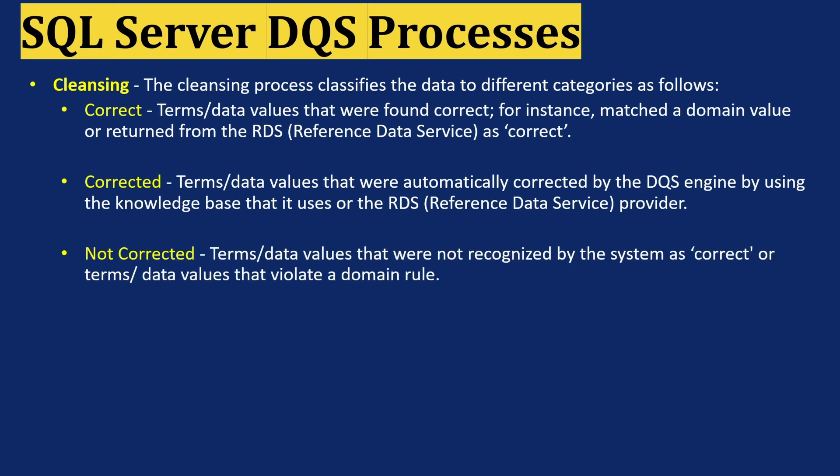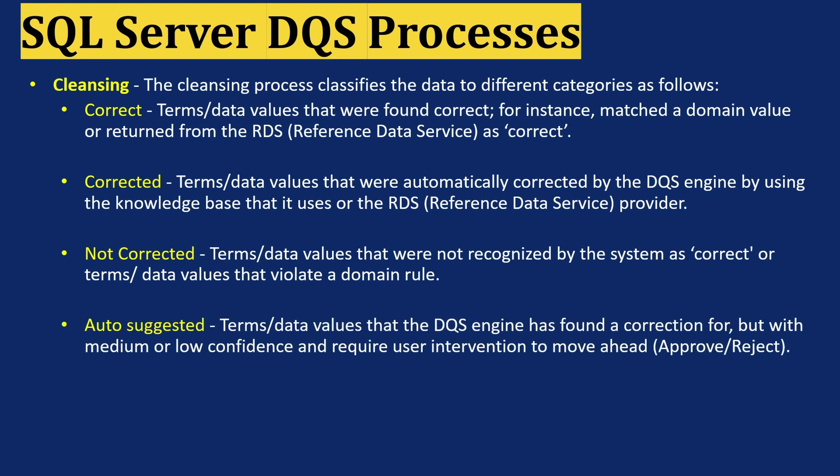Third is Not Corrected: terms and data values not recognized by the system as correct, or terms and values that violate a domain rule. Fourth is Auto Suggested: terms and data values that the DQS engine has found as a correction but with medium or low confidence, requiring user intervention — the user can either approve or reject these auto suggestions.